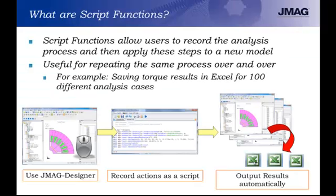Script functions allow users to record the analysis process and then apply these steps to a new model. It's useful for repeating the same process over and over. For example, saving torque results in Excel for 100 different analysis cases — instead of running and exporting results manually for each case, we can run the analysis once, record the script, and then apply this script to each subsequent analysis so results are automatically outputted into Excel.